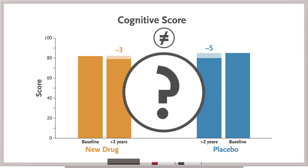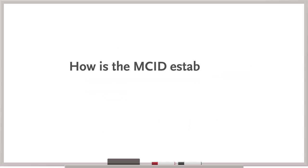But how do you know? That is, how is the MCID established? There are different methods to determine this threshold. Let's talk about two.